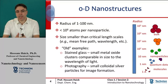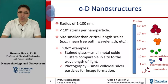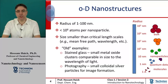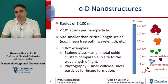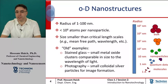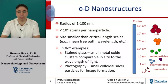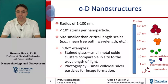The interesting and unexpected properties of nanoparticles are therefore significantly due to the large surface area of the material, which dominates contributions made by the small bulk of the material. For comparison, bulk materials — mainly particles larger than 1 micrometer — contain an insignificant percentage of atoms at the surface relative to the number of atoms in the bulk, and therefore do not exhibit size-dependent changes in their physical properties.